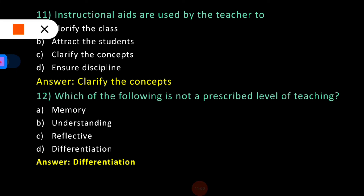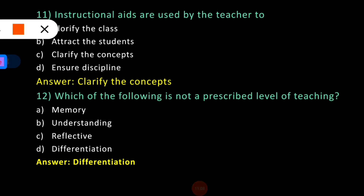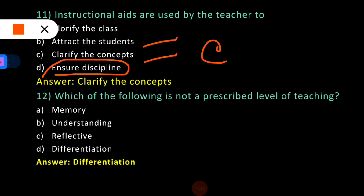Question eleven: Instructional aids are used by the teacher to? Option A: glorify the class. Option B: attract the students. Option C: clarify the concepts. Option D: ensure discipline. Option C is the correct answer. Teachers use instructional aids to clarify concepts — not to ensure discipline, attract students, or glorify the class. Different types of teaching aids are basically used by the teacher to clarify the concept.